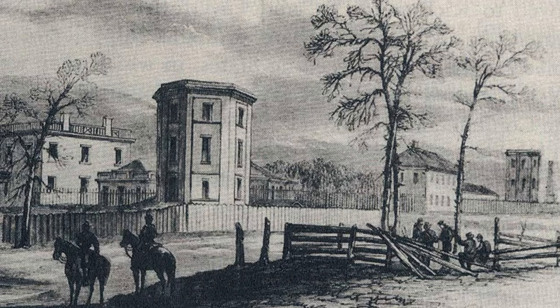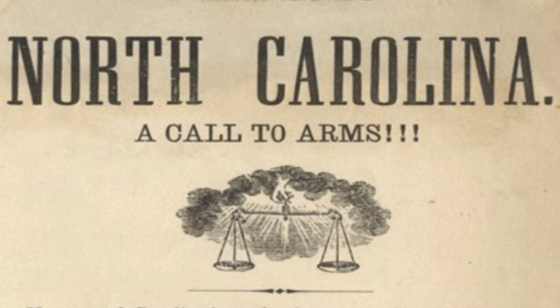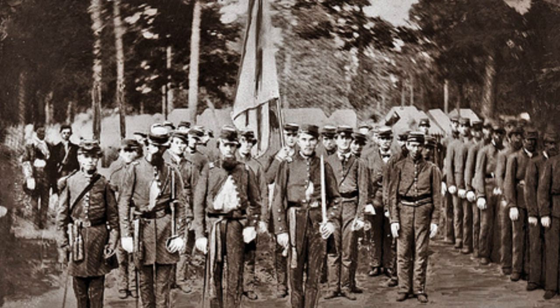Even before North Carolina seceded, Governor John W. Ellis ordered the takeover of the arsenal at Fayetteville, the Mint at Charlotte, and federal fortifications. The coastal forts of Caswell, Johnston, and Macon were seized by citizens and state militia. Prior to the state officially leaving the Union, the legislature authorized the raising of 10,000 troops and empowered the governor to call for additional volunteers.